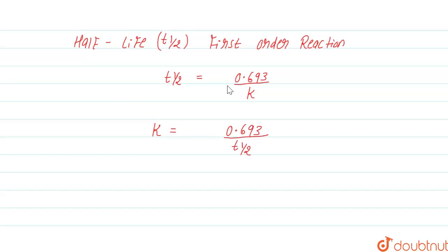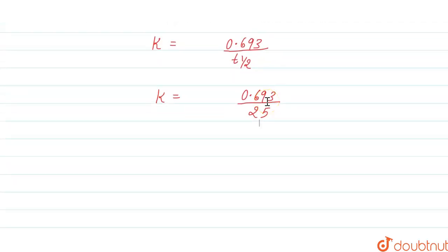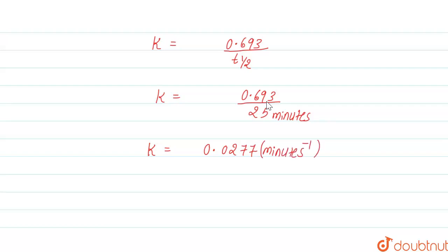We know that the half-life given in the question is 25 minutes. So K equals 0.693 divided by 25, which gives us K equals 0.0277 minutes inverse. This is our rate constant K.